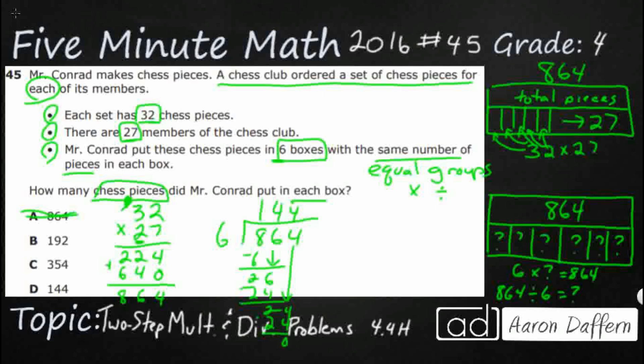How many chess pieces did Mr. Conrad put in each box? 144 pieces in each chess box. Answer D.